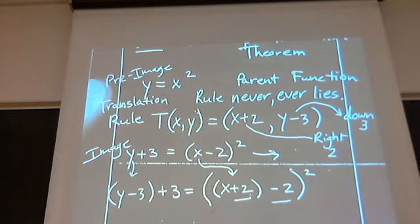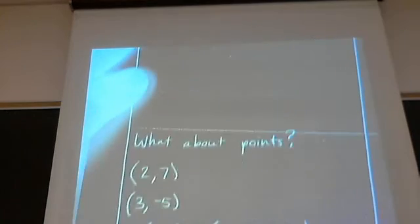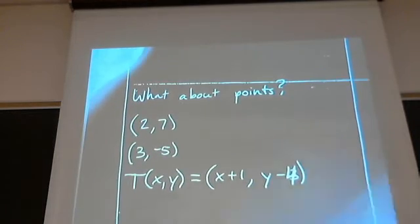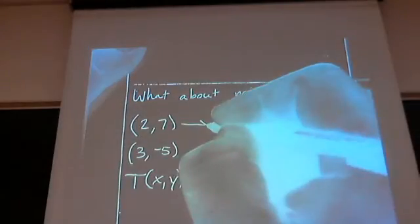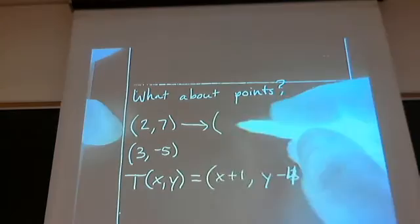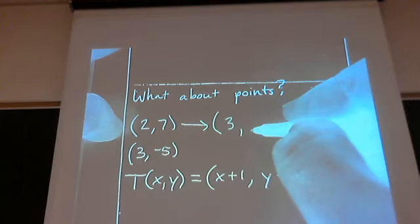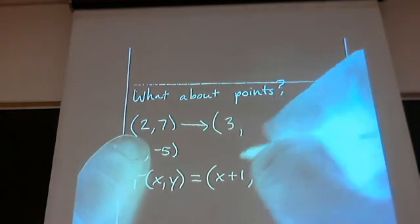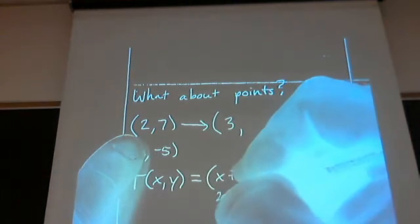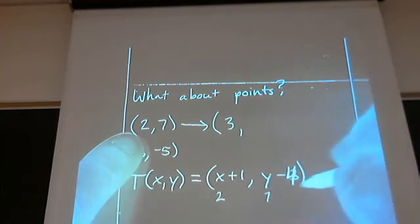We'll practice with another one of those in a second. So, what about points? What happens if you have a set of two points and you have a rule, a translation rule, that says right one and down four? Well, it's pretty basic. Right one would add a one to the two. You're just plugging in the two right here, plugging in the seven right there.